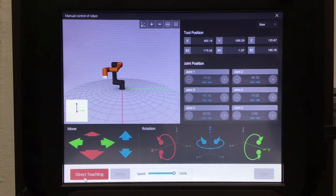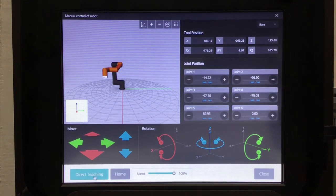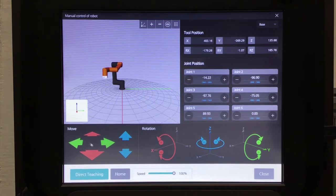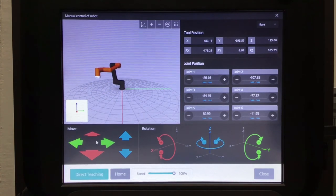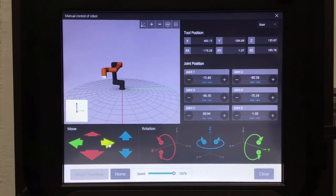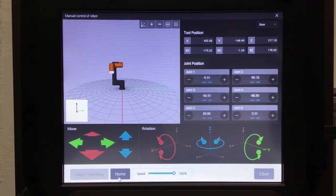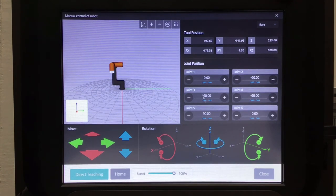When you're done direct teaching, all you have to do is just click the direct teaching button again and now it's blue and now all the other options are available again and you can move the robot just as you had before. Very simple, very easy. And that is the manual move screen on how you manually move your robot.